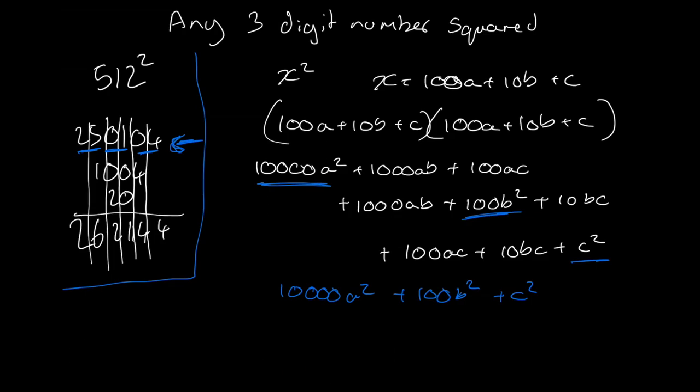Then in our next line, we actually have the a times by b times by 2. So in here we have 1,000ab and then here we have 1,000ab. That becomes our next term, which is actually this term here.